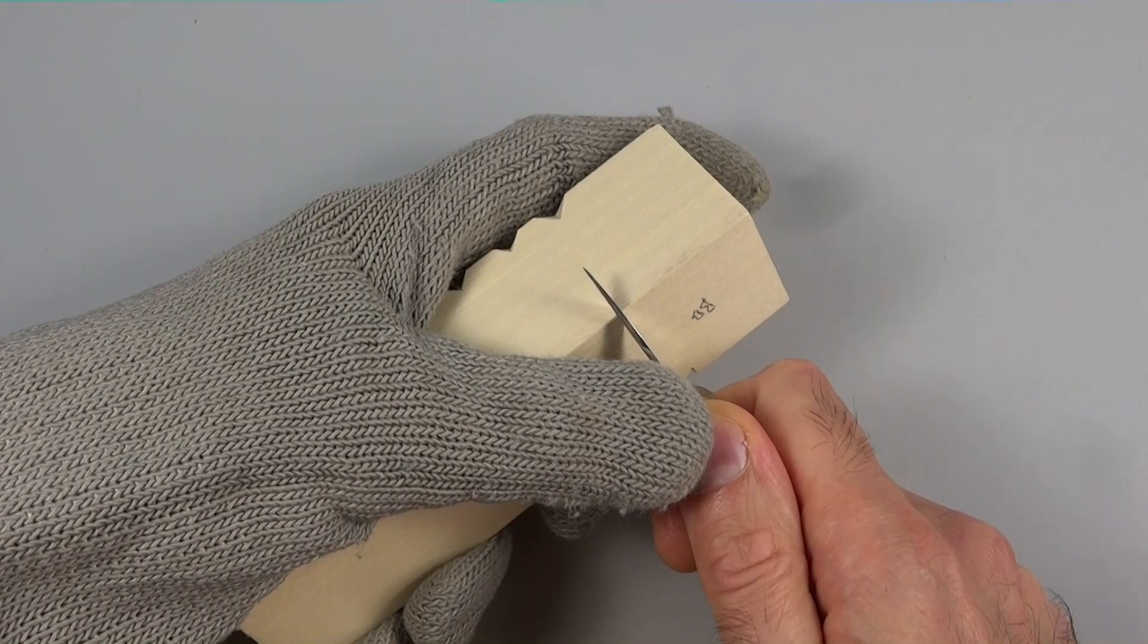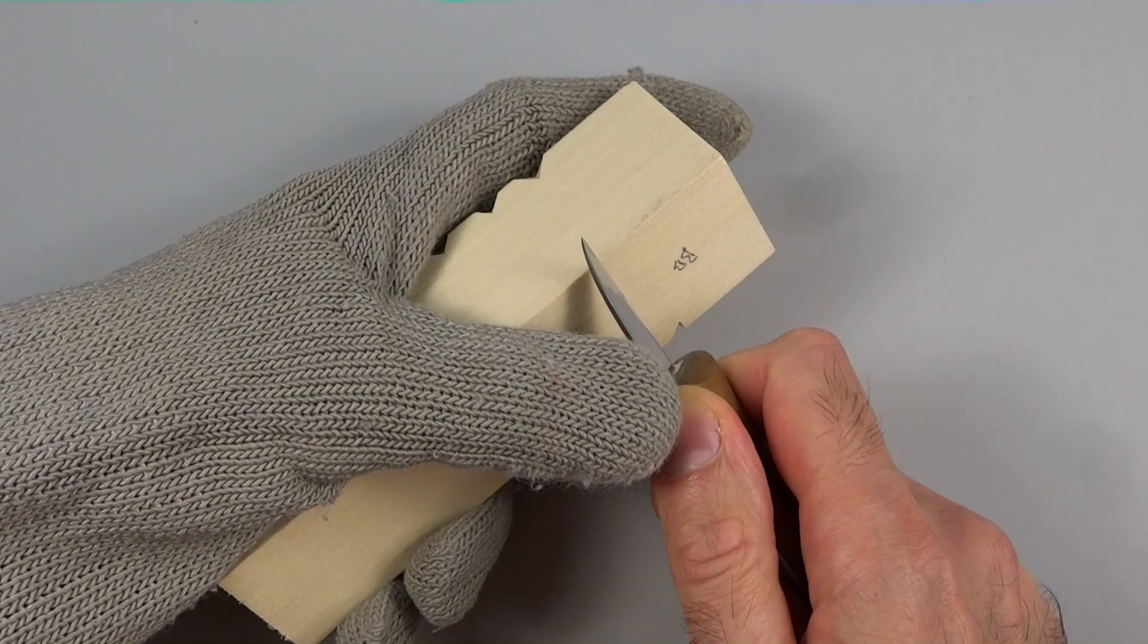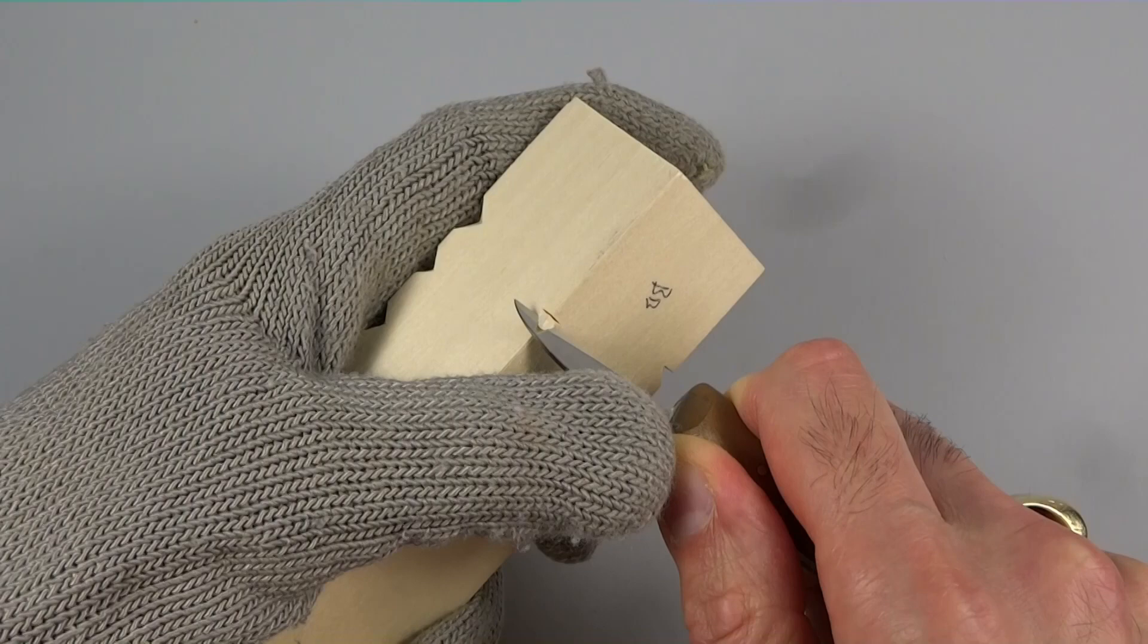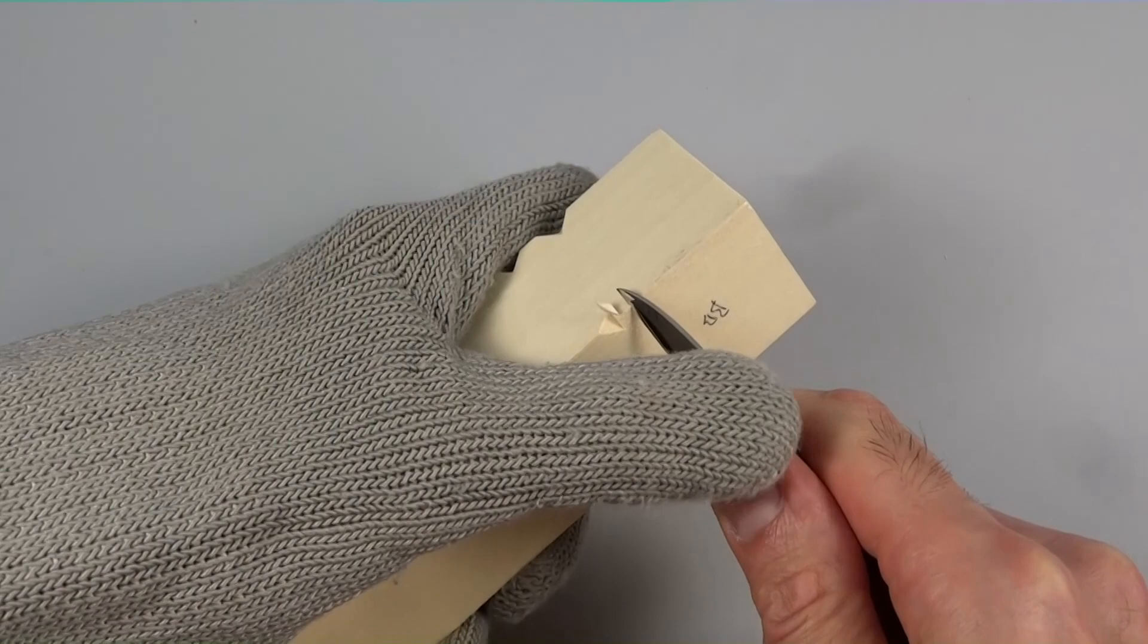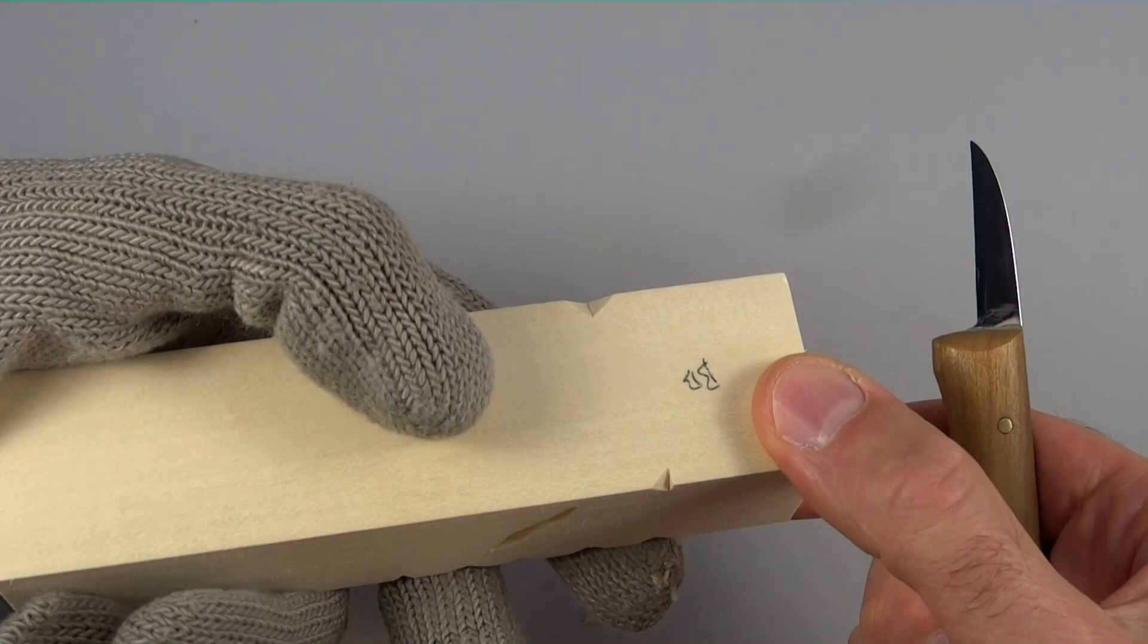Now, to the right and the left of this stop cut, we're going to make an angled cut into that stop cut. Make sure that angle is consistent. There you go, there's one. Now I'm going to go to the right.